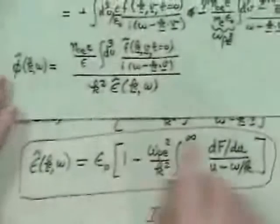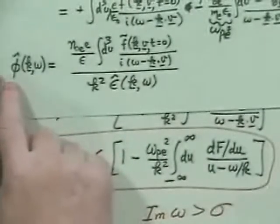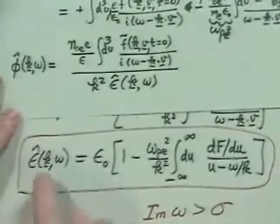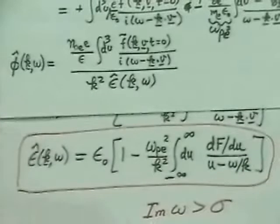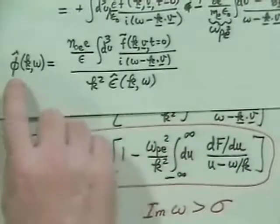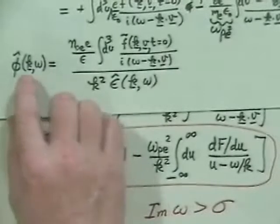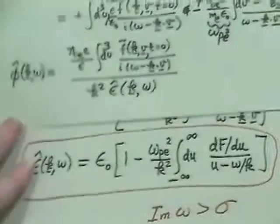What we have found is that the Laplace transform of the potential is given by this expression, and the dielectric constant that goes into it is defined accordingly. The question is: what is φ in real time? It's a time-varying quantity, and we'll keep it as a function of k — so we're interested in how φ varies in time for a particular k mode.